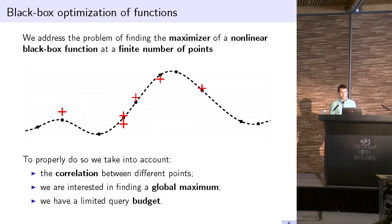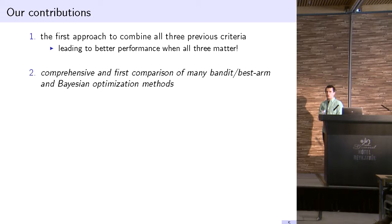We want to find the best of these possible points. We take advantage of the fact that we often have a limited query budget. We know we want to run this for 100 iterations and at the end give a single answer. Our contributions are to combine all three of these previous criteria, which can lead to better performance. We give a comprehensive comparison of many bandit algorithms, best-arm algorithms, and more classical Bayesian optimization algorithms.